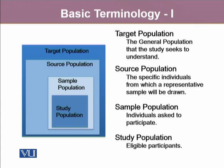The last type is the study population, which consists of the eligible participants. For example, if we want to study breast cancer patients in Pakistan, all the breast cancer patients in Pakistan will be our target population. If we want to collect data only from Lahore, then our source population will be all breast cancer patients living in Lahore. The sample population could be all patients visiting either Mayo or Shaukat Khanum Hospital. Not all of them will be eligible, so we set eligibility criteria, and those who are eligible are called our study population.